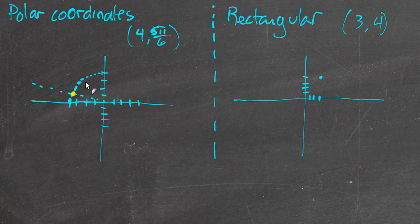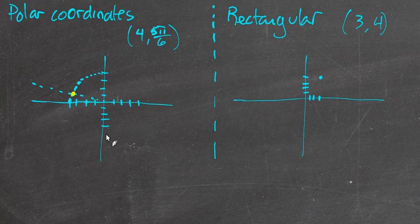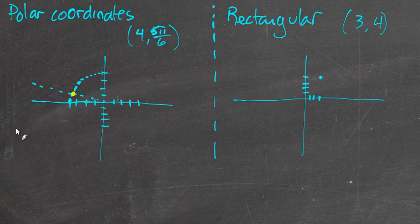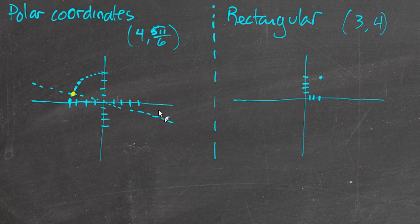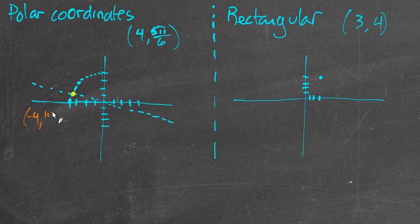And the thing about polar coordinates, we could represent this in several different ways. Suppose, instead of going to 5π/6, I went all the way around like 180 away from that, and I went to 11π/6. It's like right there. And so I come around to 11π/6. I can still have my point wind up here if instead of 4, I do negative 4 and 11π/6.